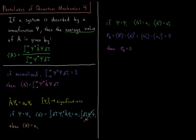Any observable property in classical mechanics can be represented by this quantity here — total energy, kinetic energy, etc. It is equal to the integral over the entire domain of the wave function. In one dimension we'd say the integral from minus infinity to infinity dx; in three dimensions we'd integrate over all three of them: dx, dy, dz, etc. So however many dimensions we have, we integrate over all real space.